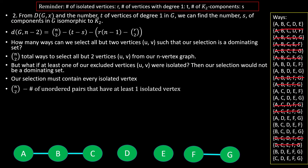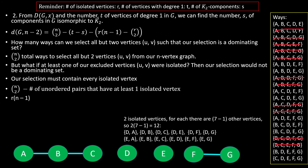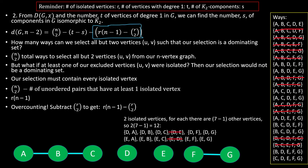How many of those pairs are there? There are r isolated vertices, and for each isolated vertex there are n minus 1 other vertices we could pair it with, giving us r times (n minus 1) pairs. But we're double counting the cases where both vertices are isolated, so we need to subtract r choose 2. This term then is the number of all possible pairs with at least one isolated vertex.